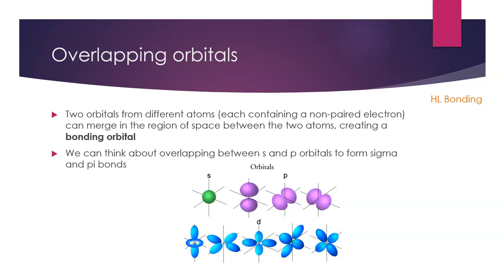When a bond forms, we get two orbitals from different atoms, each containing a non-paired electron, that merge in the region of space between the two atoms. This creates what we call a bonding orbital. So we think about this as generally forming between s and p orbitals to form sigma and pi bonds.